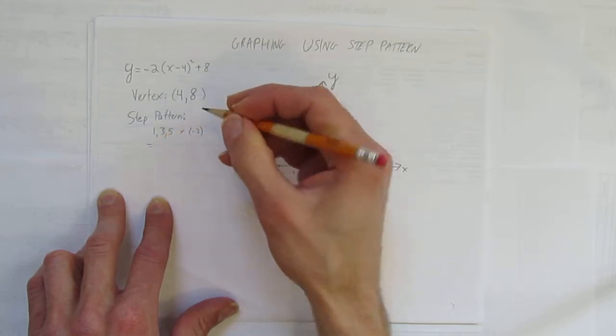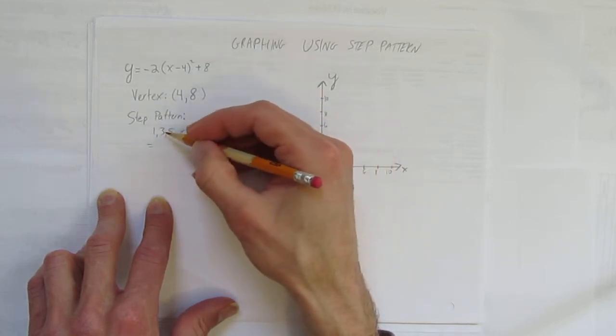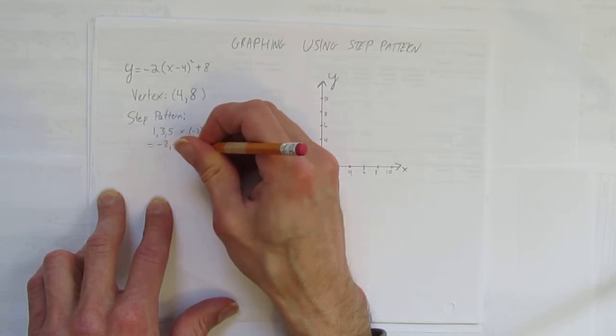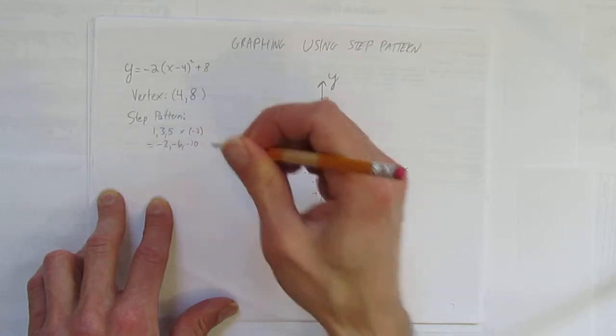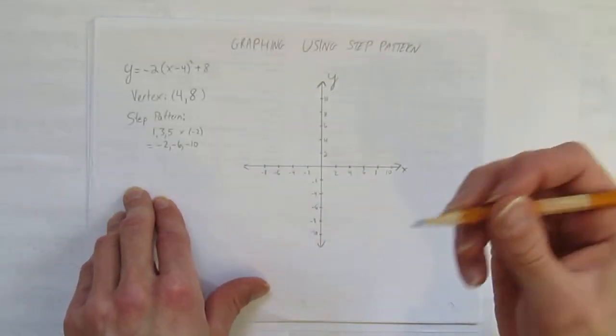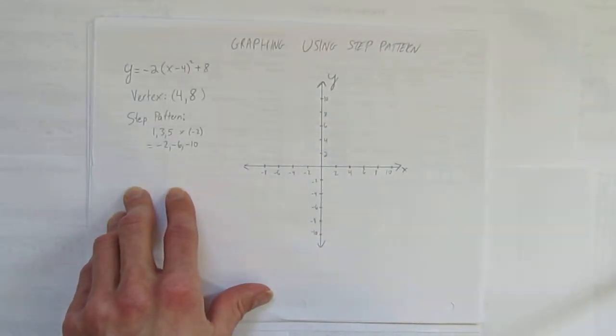And so the step pattern for this parabola is negative 2 times 1, 3, 5, which gives negative 2, negative 6, and negative 10. Now we have everything we need to graph this parabola using step pattern. That is the vertex and the step pattern. So let's graph it.